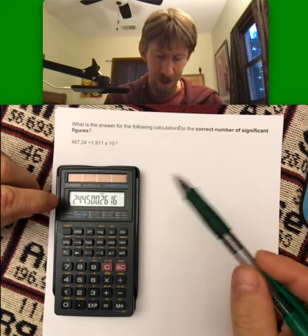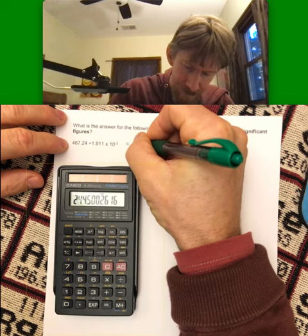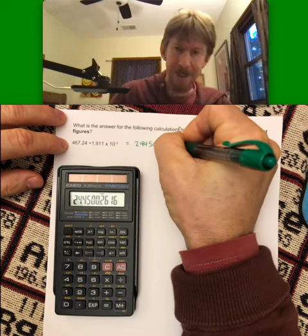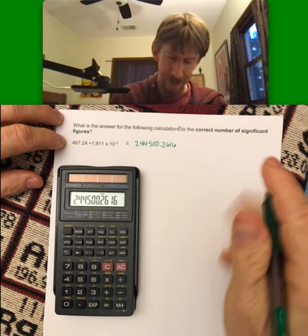And we do, we get 244,500.2616, which is all the digits on the calculator.